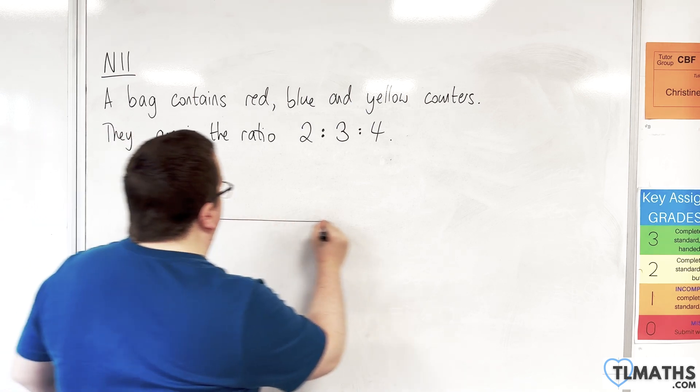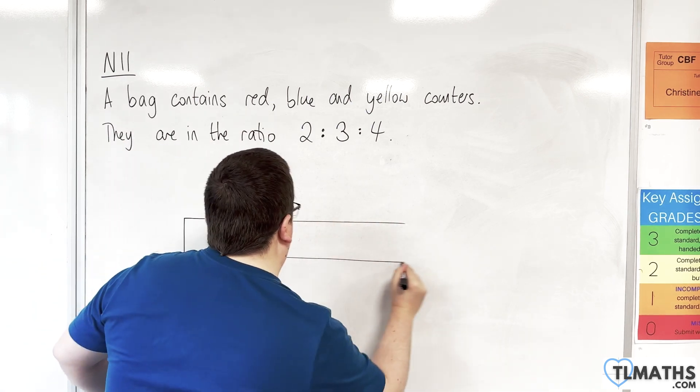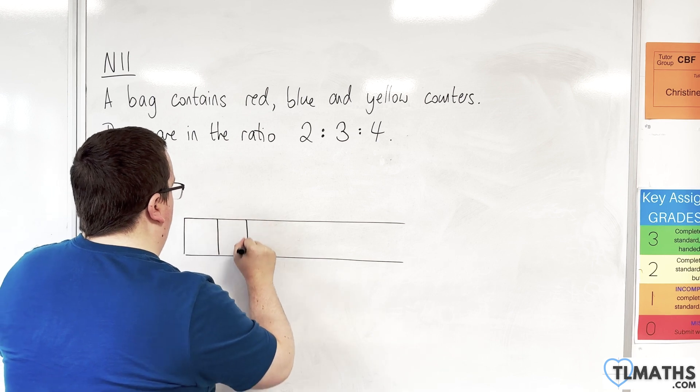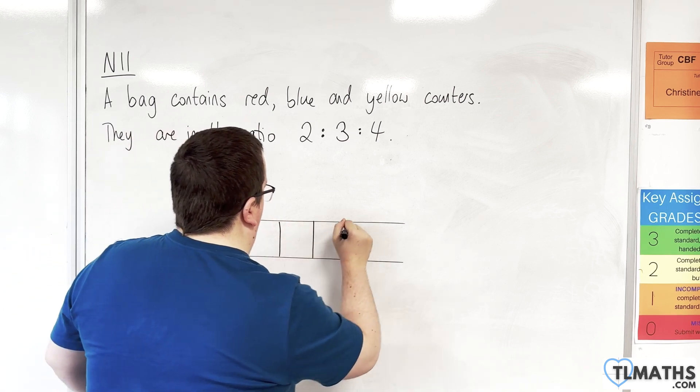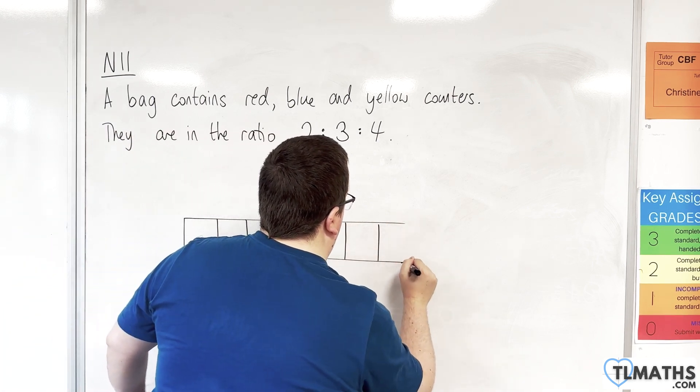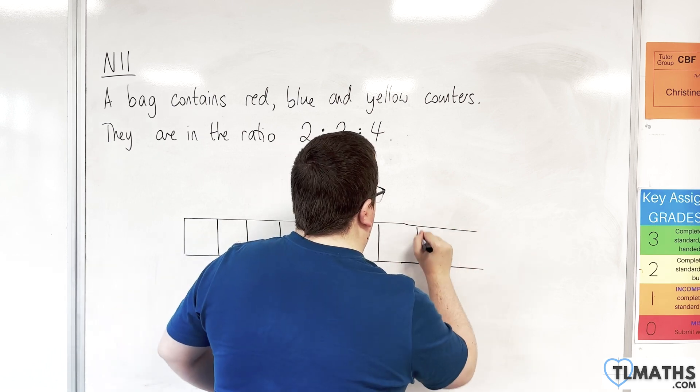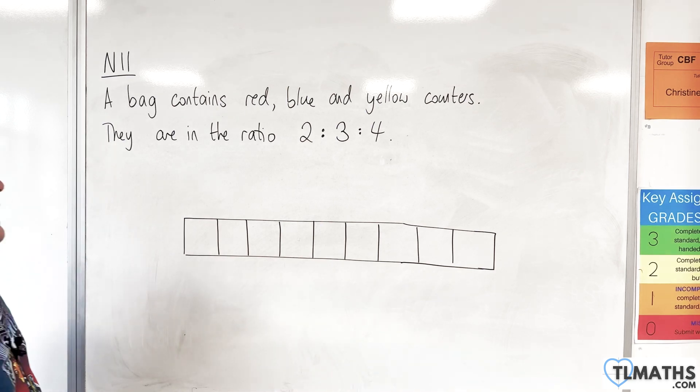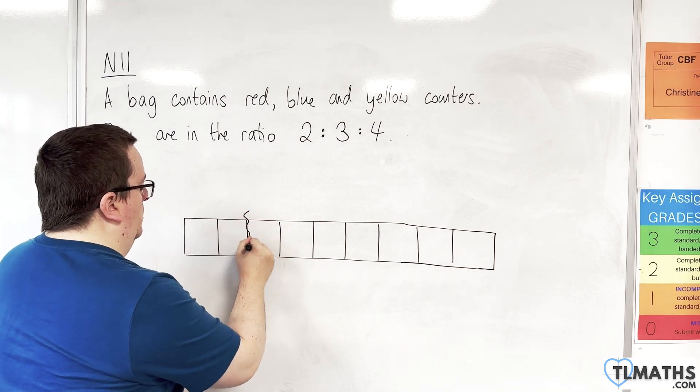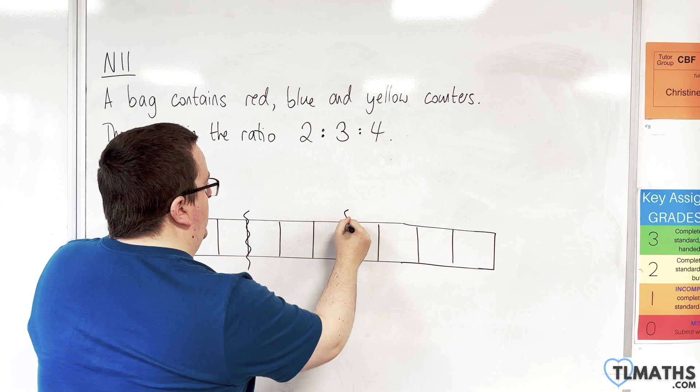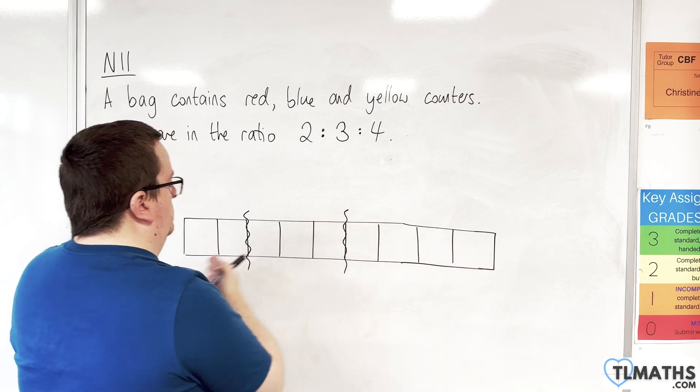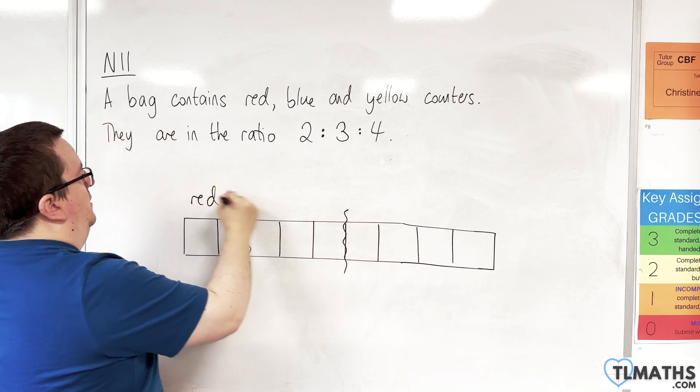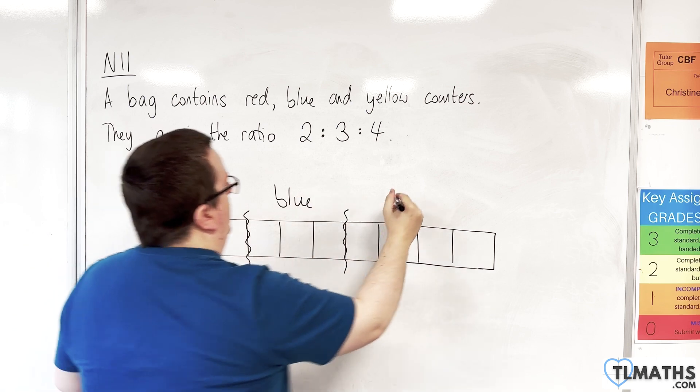What you're looking at: one, two, three, four, five, six, seven, eight, nine. We've got 2:3:4 - red, blue, and yellow.